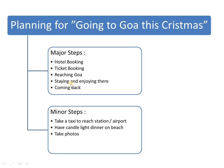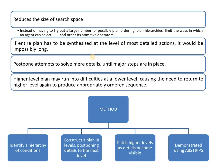So if I am categorizing my process of going to Goa this Christmas and dividing them into major steps and minor steps — the major steps are: hotel booking, ticket booking, reaching Goa, staying and enjoying there, and coming back. The minor steps are: taking a taxi to reach the station or airport, having a candlelight dinner on the beach, taking photos, and many other things. All the minor steps can be achieved if and only if you achieve the major steps first. For example, to take a taxi to the airport, you first have to book the ticket. All tasks are categorized according to priority.